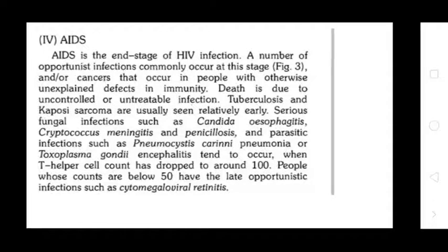AIDS is the end stage of HIV infection. A number of opportunistic infections commonly occur at this stage, along with cancers that occur in people with defective immunity due to uncontrolled, untreatable infections. Tuberculosis and Kaposi's sarcoma are usually seen relatively early. Serious fungal infections such as Candida esophagitis, Cryptococcus meningitis, Penicilliosis, and parasitic infections such as Pneumocystis carinii pneumonia or Toxoplasma gondii encephalitis tend to occur when the T-helper cell count drops to around 100. People whose counts are below 15 have been subject to opportunistic infections such as cytomegalovirus disease.